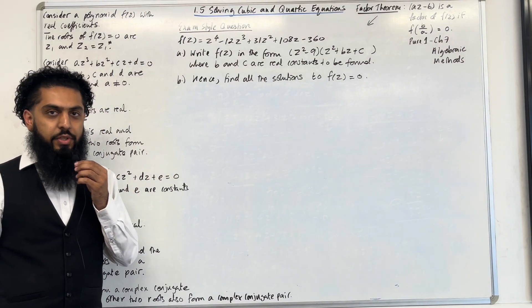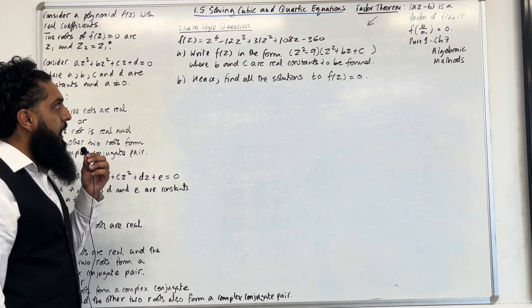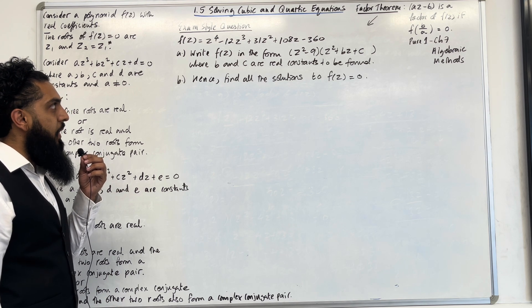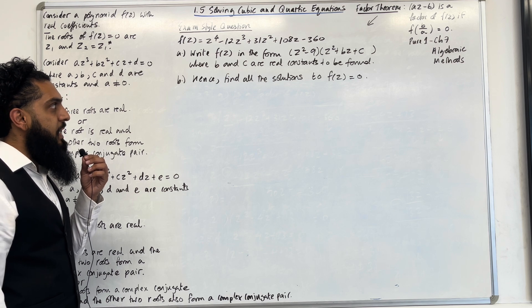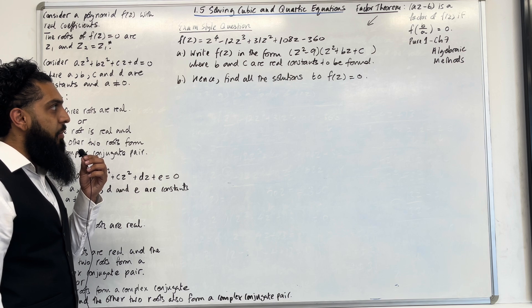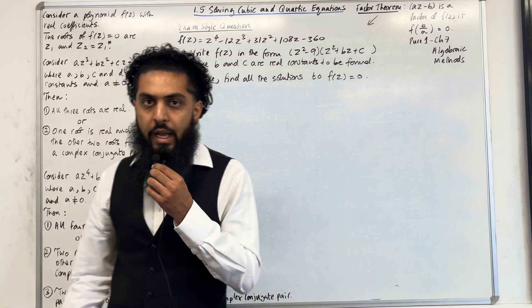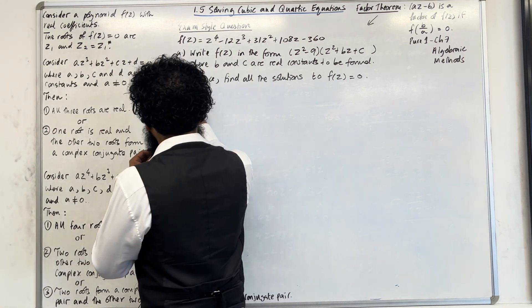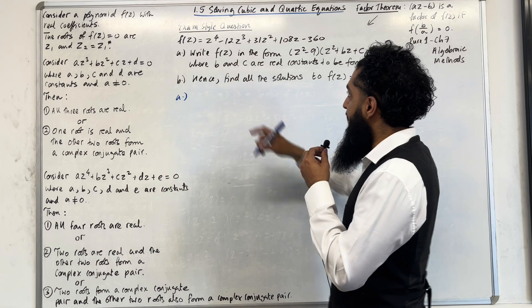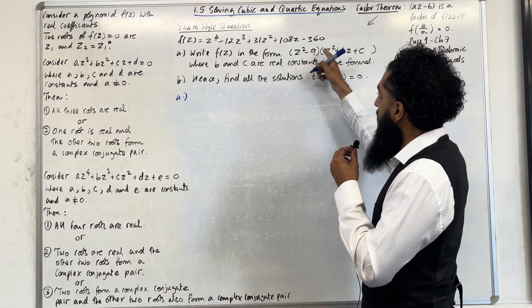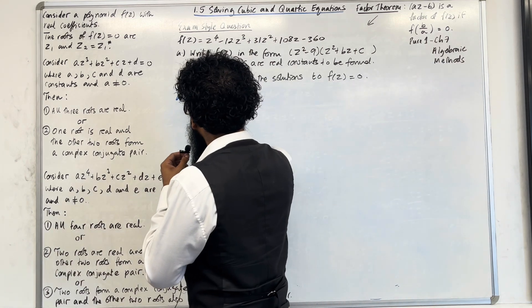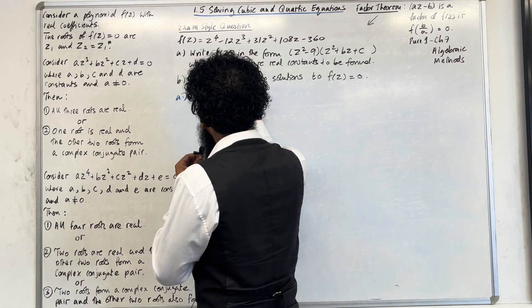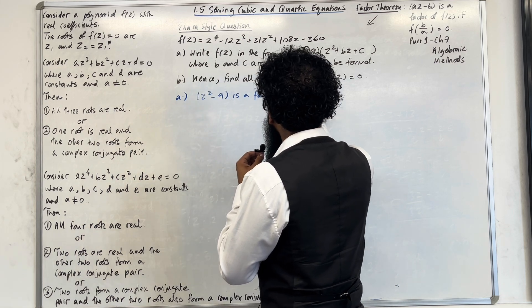Let's have a look at another exam style question. f(z) = z⁴ − 12z³ + 31z² + 108z − 360. Part A: write f(z) in the form (z² − 9)(z² + bz + c), where b and c are real constants to be found. Notice that the first bracket, z² − 9, is a factor of f(z).